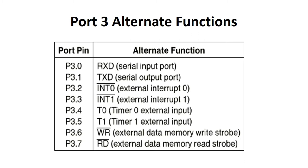P3.2 and P3.3 are the external interrupt pins — External Interrupt 0 and External Interrupt 1. Whenever any external device wants to interrupt the CPU, that signal can be given to either P3.2 or P3.3. P3.4 and P3.5 act as the timer input pins (T0 and T1). Whenever we operate a timer in counter mode, the external clock signal is applied to T0 for Timer 0 or T1 for Timer 1.